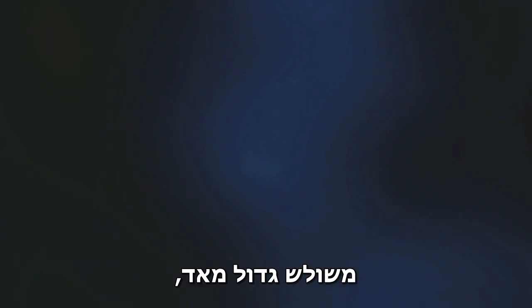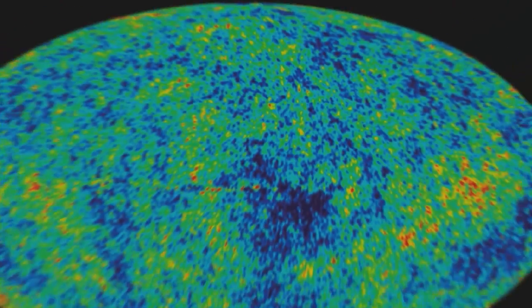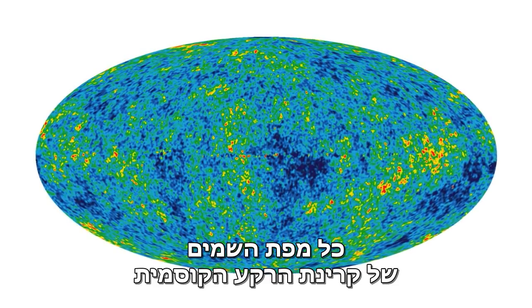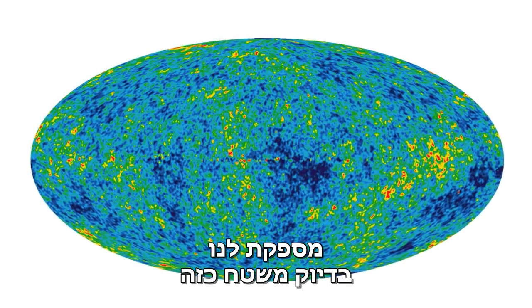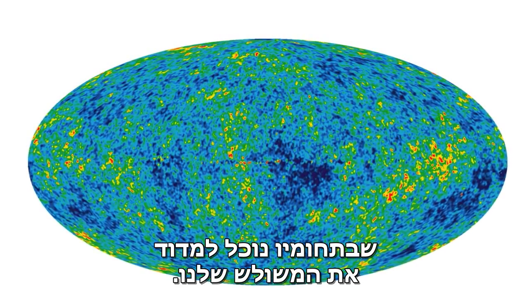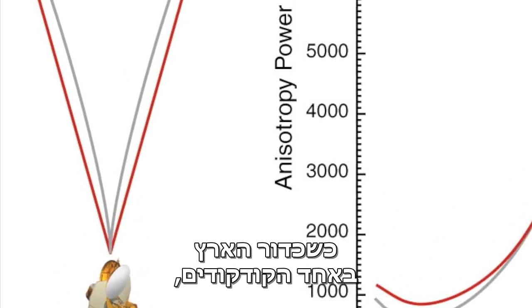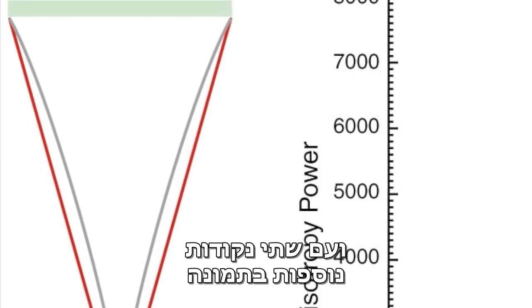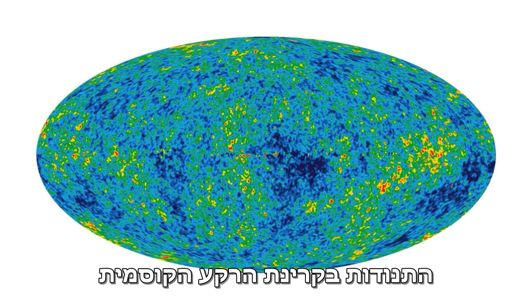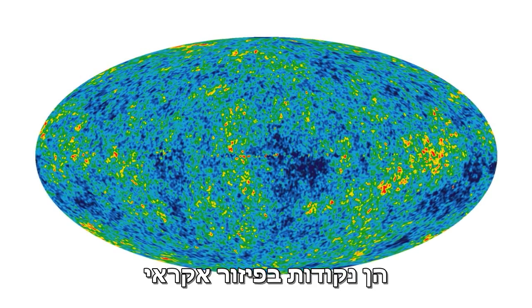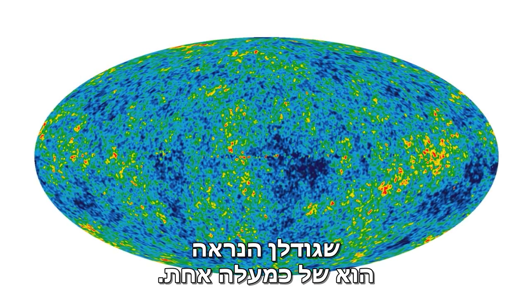To measure the shape of the universe, all we need is a triangle — a really big one, one that covers the entire universe. The all-sky map of the cosmic microwave background provides us with just such a surface within which to measure our triangle. With the Earth at one apex and two more points on the image, we can make our measurement. The fluctuations in the cosmic microwave background are randomly placed spots, with an apparent size of about one degree across.